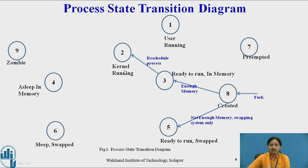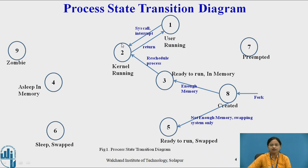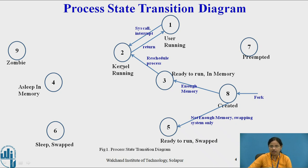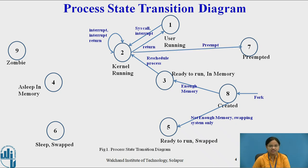While executing in kernel running mode, the process may enter the user running state and execute in user mode. After a period of time, a clock interrupt handler interrupts the CPU and the process enters kernel running mode. The kernel services the clock interrupt, and upon completion may decide to schedule another process. It preempts the currently running process, which enters the preempted state — state 7. State 7 and state 3 are similar in that both are ready-to-run, but state 7 specifically indicates the process was preempted by the kernel while executing in kernel mode.